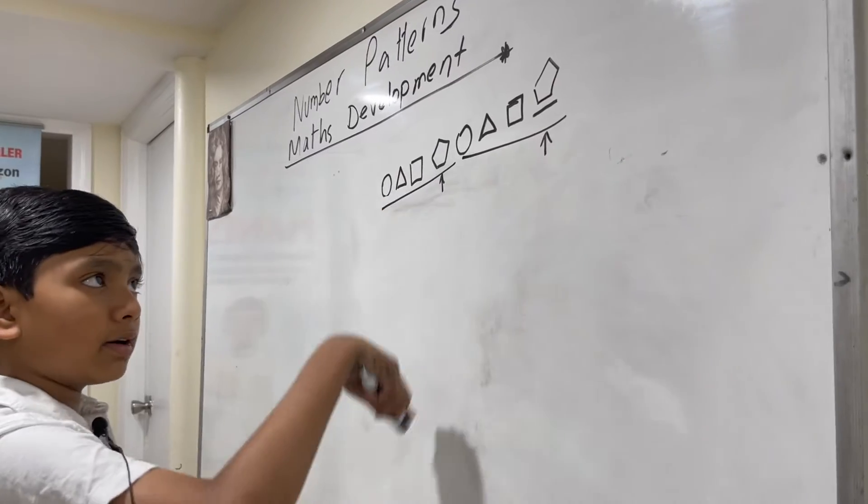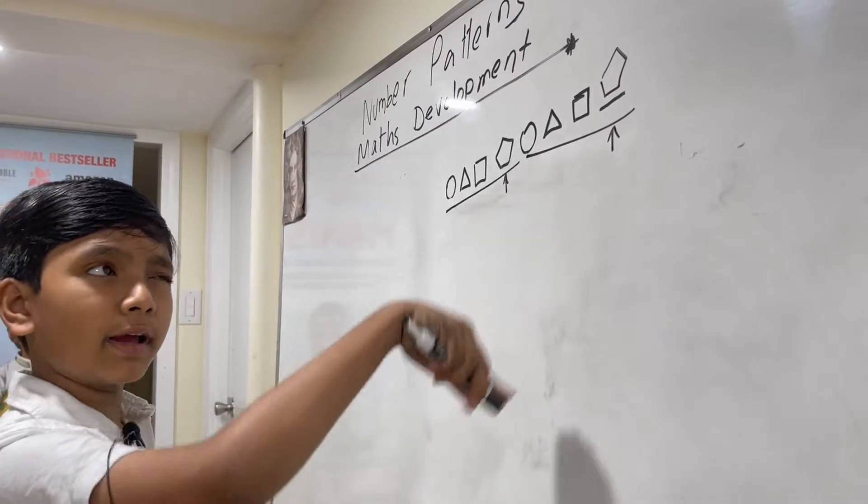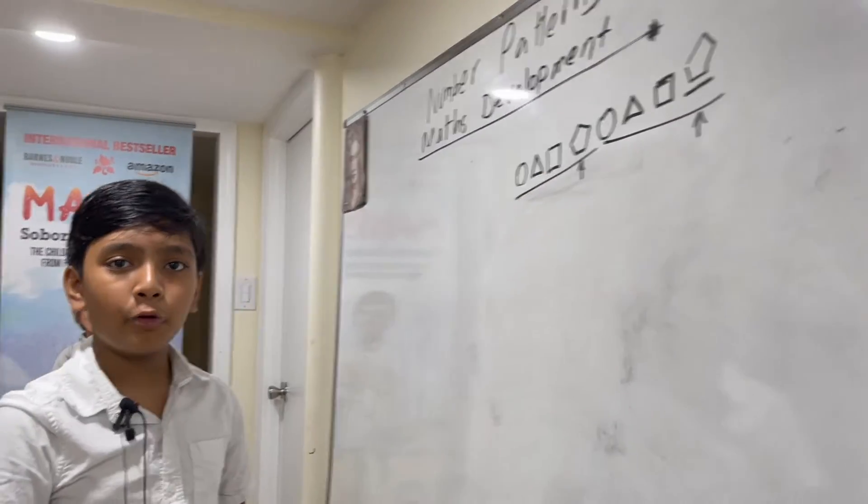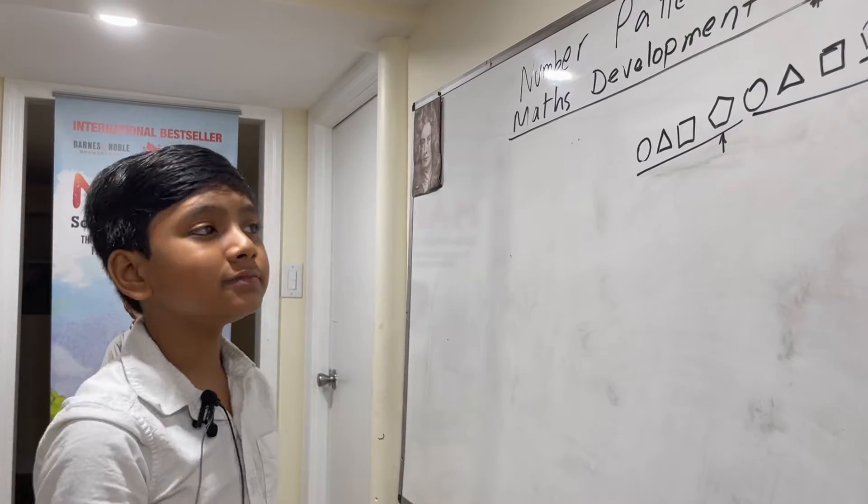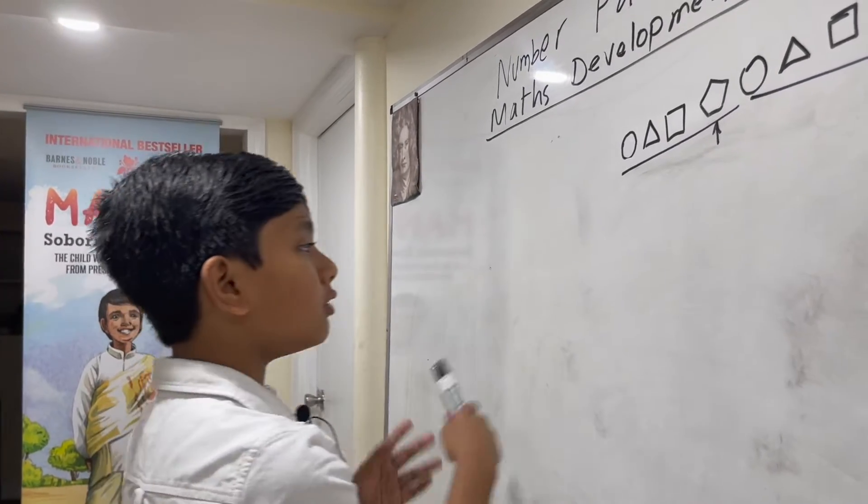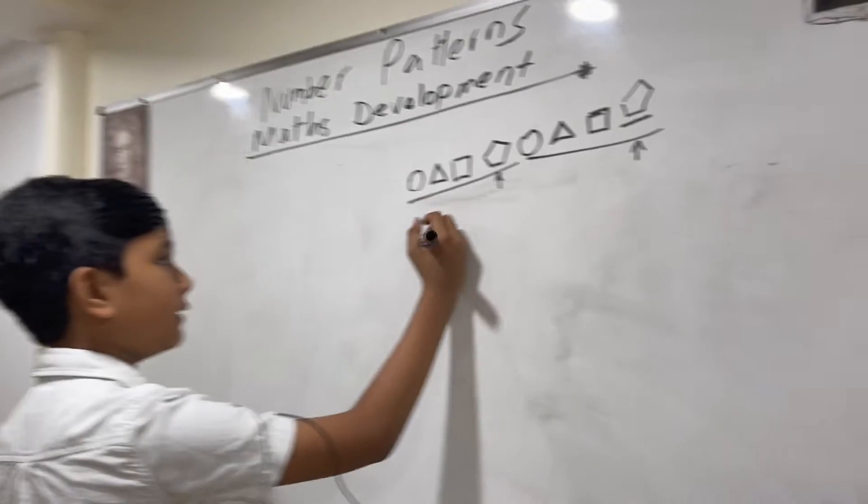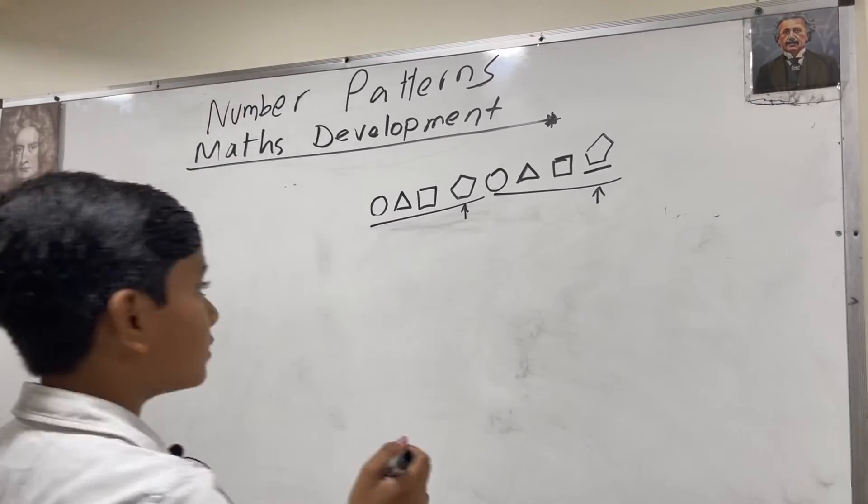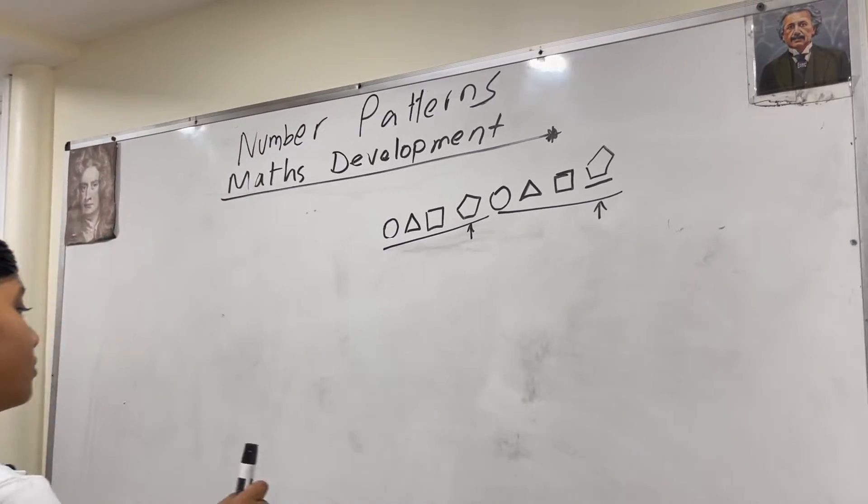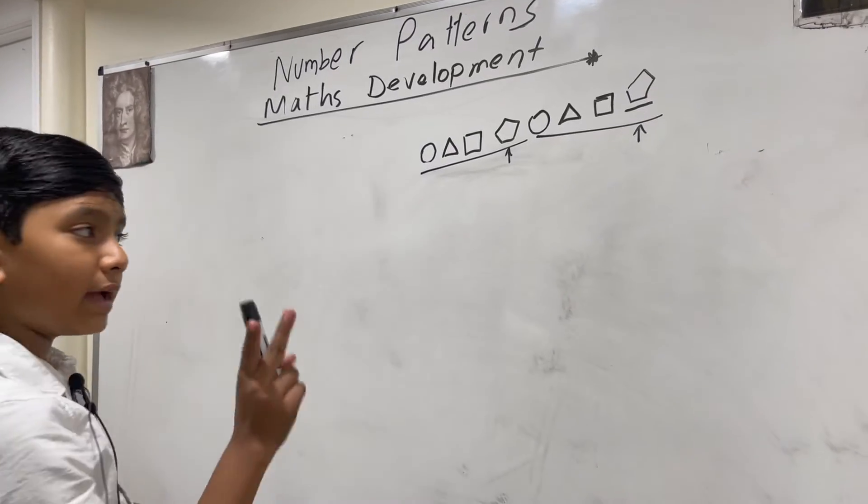Circle, triangle, square, pentagon, circle, triangle, square, pentagon. So we're going to be doing something like that today. Now, sequences have two types.